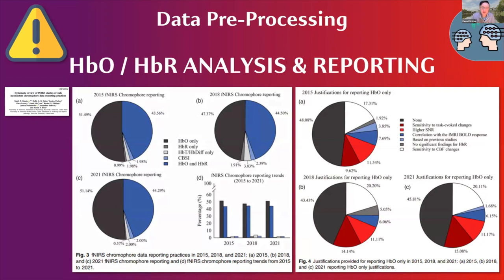In most cases, the coherence analysis is only done on the HbO data. The justification of only reporting HbO data is often linked to the fact that HbO data is more sensitive to task-evoked changes, and in some cases there were no significant findings for the HbR data. What we would suggest is that you at least also report the HbR data and reproduce your analysis with HbR data. However, it's probably okay if you base your main analysis on HbO data, as that is what is quite consistently done most often and where you're more likely to find effects, especially when using wavelet transform coherence.